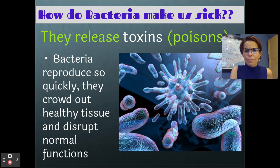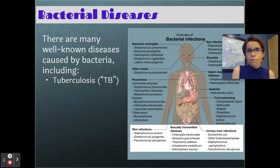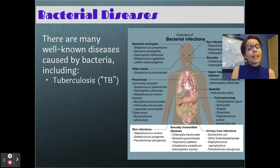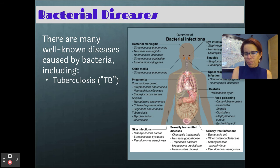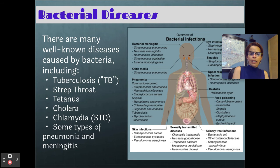Viruses are like little bombs going off that blow up our cells — not similar to bacteria at all. Things caused by bacteria include tuberculosis, which is arguably one of the most common infections on the planet — something like one in four adults around the planet has it, though not all are symptomatic, and about 5–10% will actually develop symptoms. Other bacterial diseases include strep throat, tetanus, cholera, chlamydia — a sexually transmitted disease — and even some types of pneumonia and meningitis.